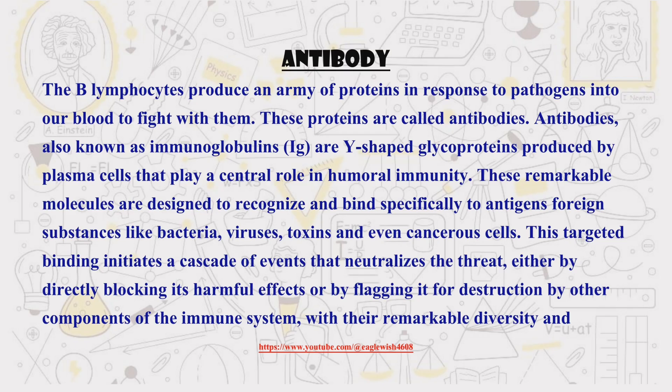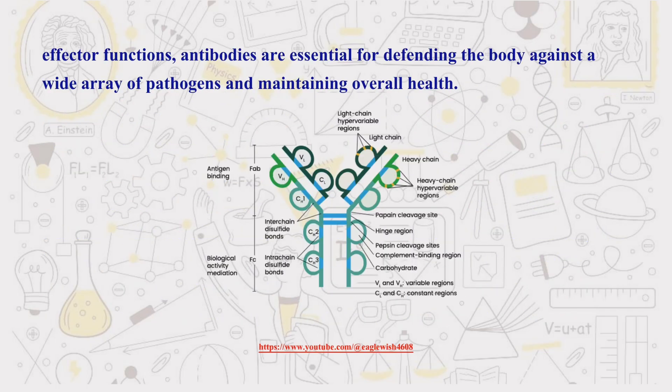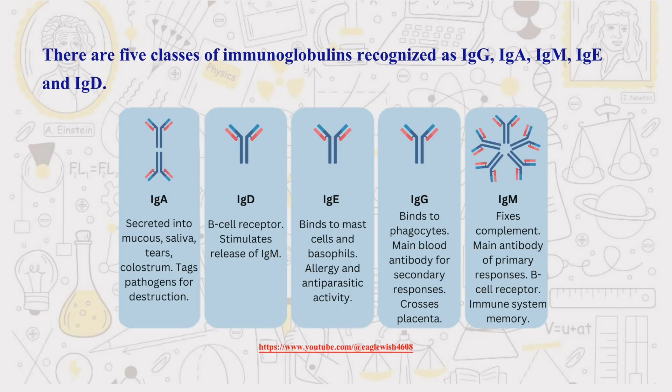Now let's discuss antibodies. Antibodies are Y-shaped proteins, like tiny guided missiles, crafted by B-cells to neutralize specific threats, and play a central role in the immune response. There are five types of immunoglobulin: IgG, IgA, IgM, IgE, and IgD.